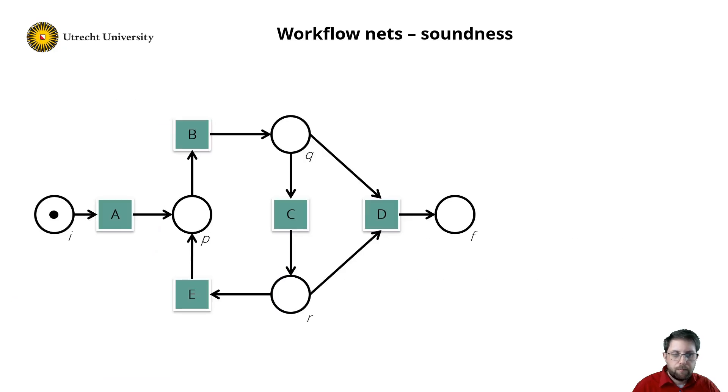So let's consider an example. Is this net a workflow net? Well, it has an initial place i and a final place f. All transitions are on a path, and there is one token in place i. So yes, this is a workflow net.